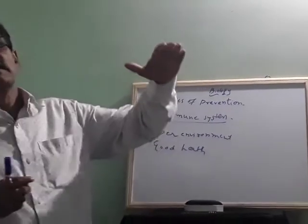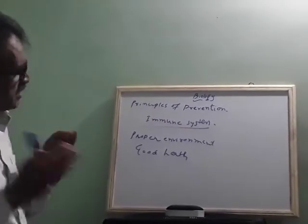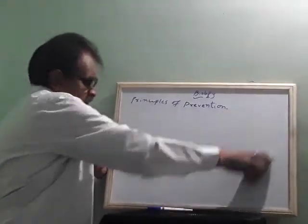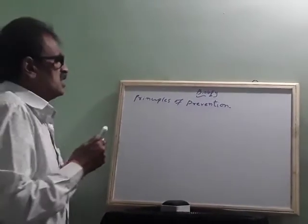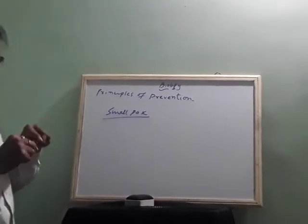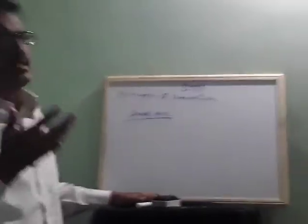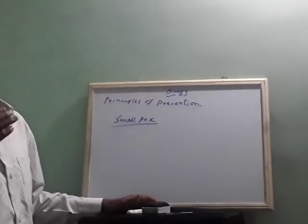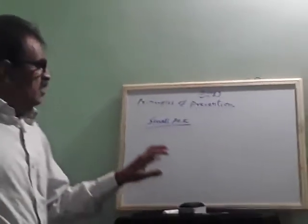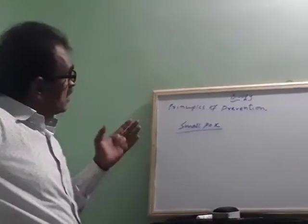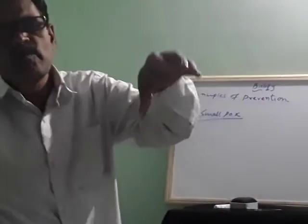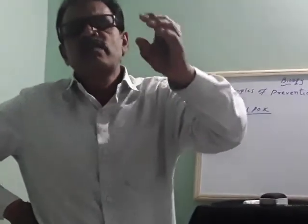Specifically, what can we do? Most diseases have been eradicated — for example, smallpox. Smallpox is an infectious disease passing from one person to another. Earlier, maybe in the 17th or 18th century, there was no medicine for smallpox. But if a person was affected by smallpox once, in the future in his life, he would not be affected by smallpox again.